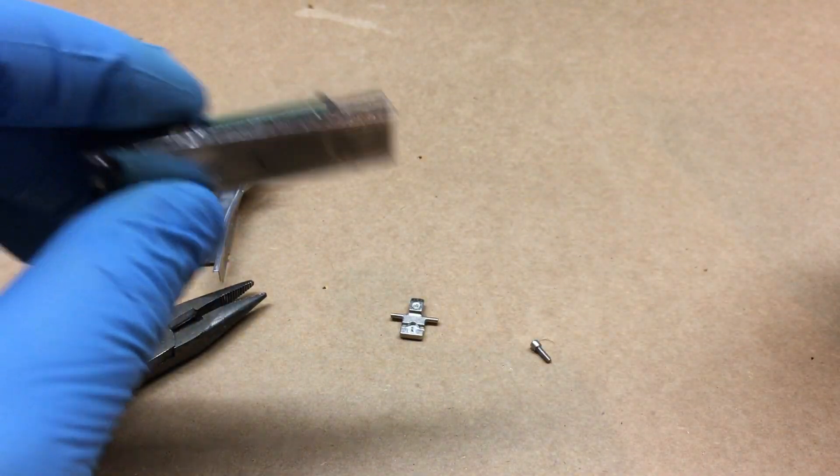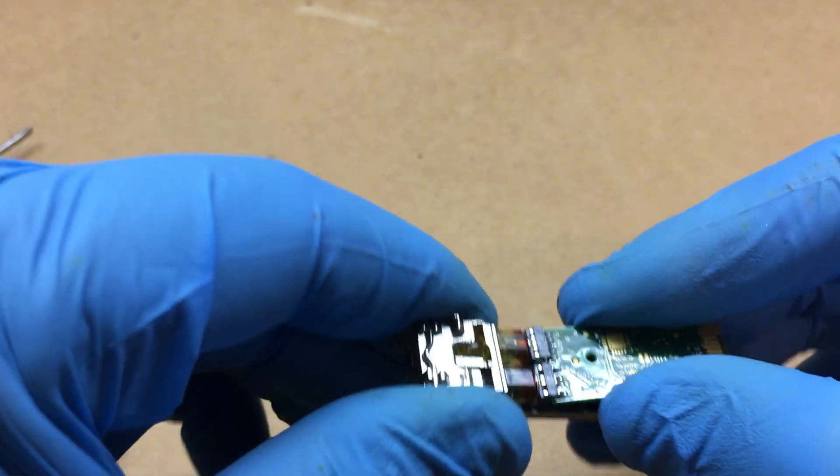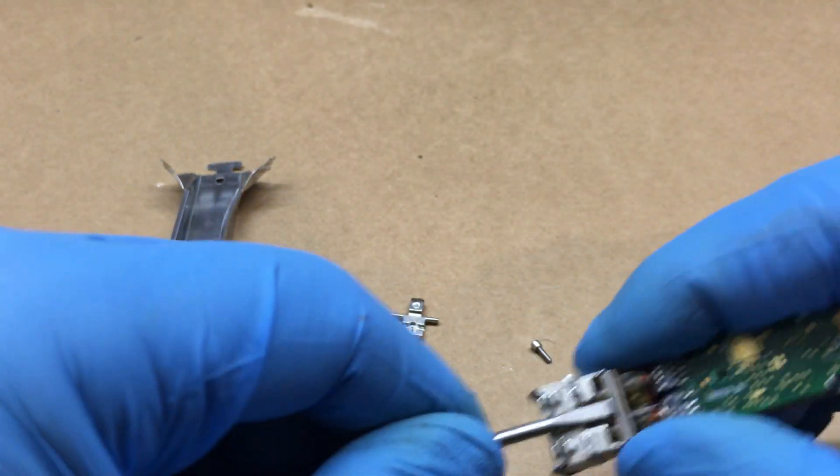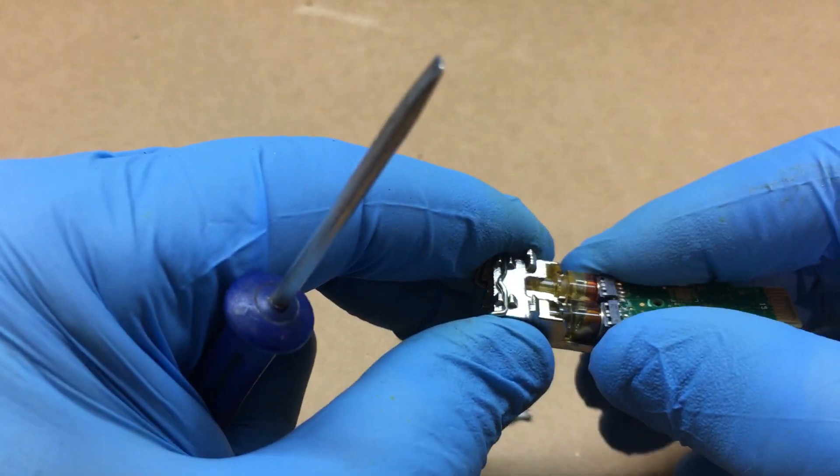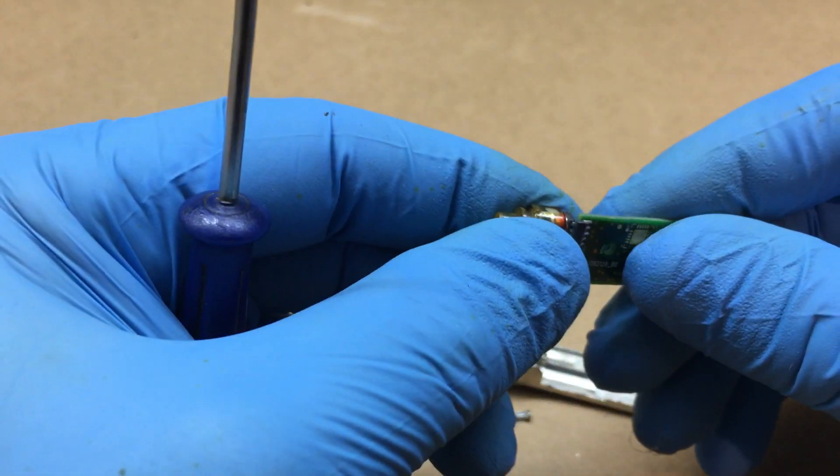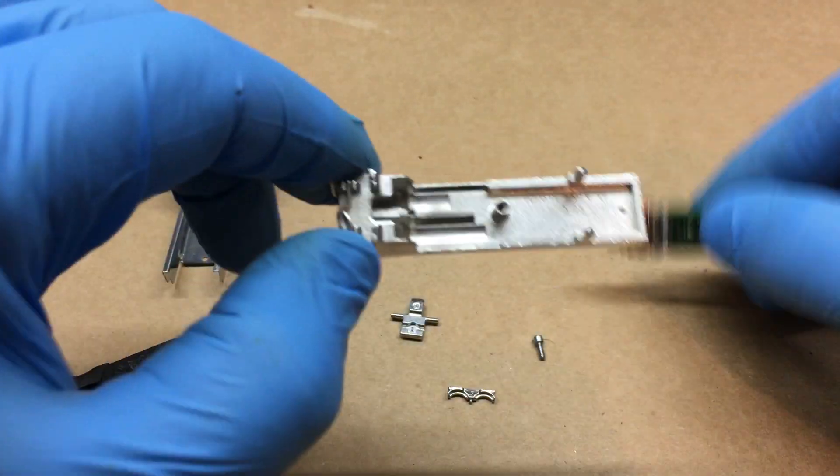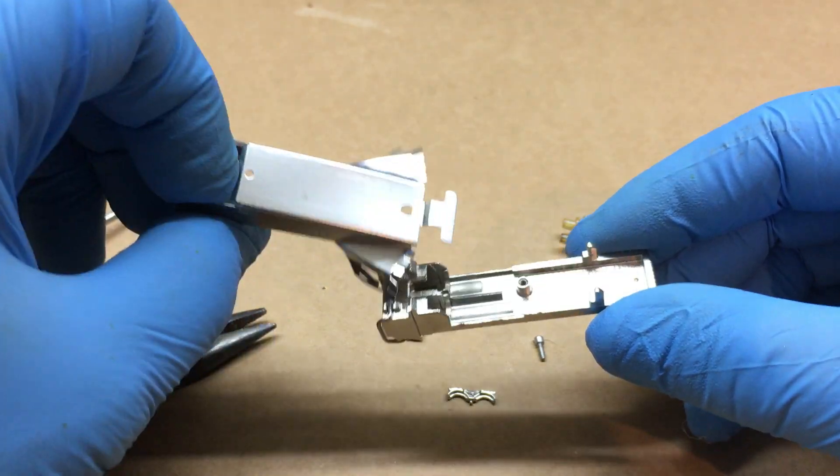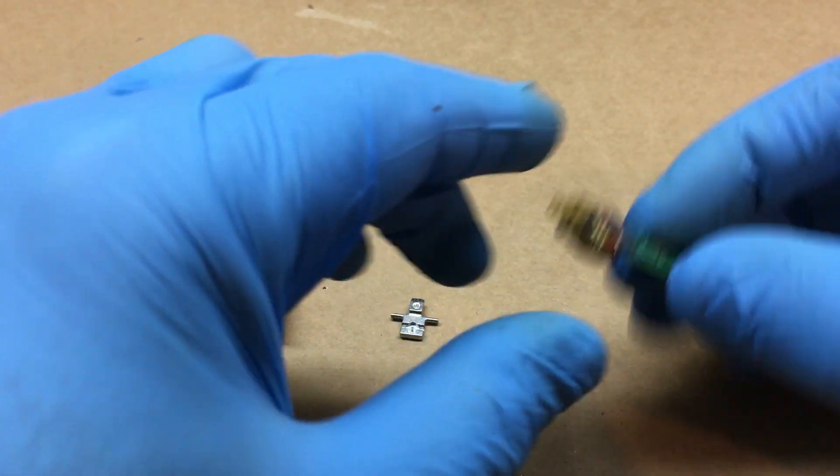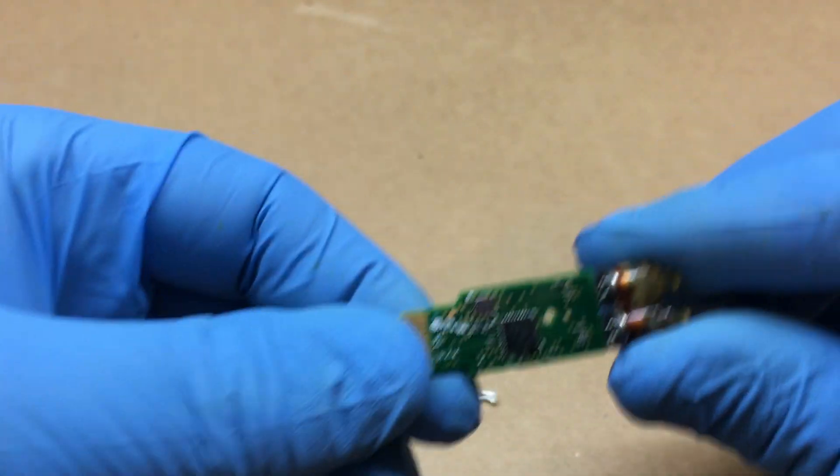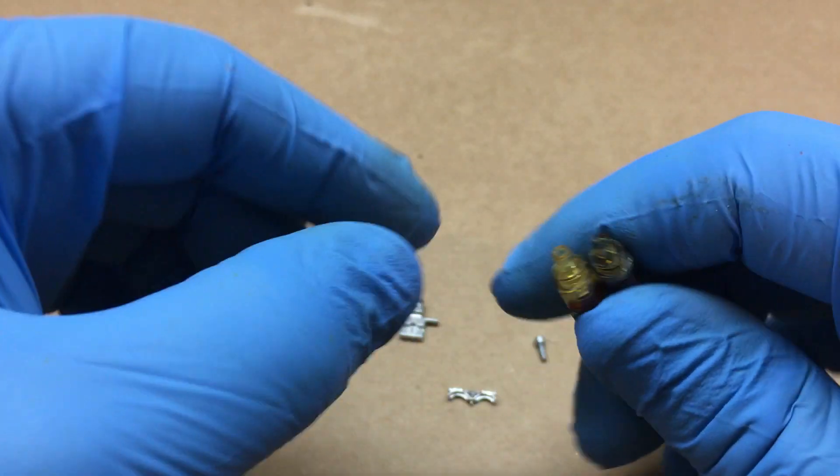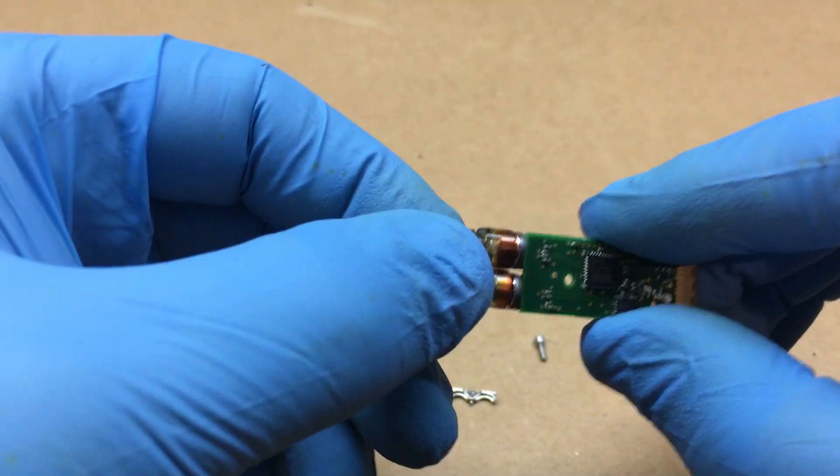Now that that little screw is off, we can go ahead and pop that guy up and release that. Now you just have the housing here, what's left of it. And here it is—you have your little circuit board, and here's where your fibers make contact.